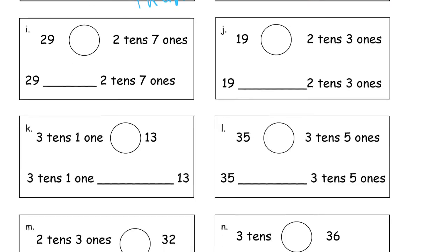Here we have 2 tens, 7 ones. That's the number 27. 29 is larger than 27, so alligator eats the 29. So 29 is greater than.